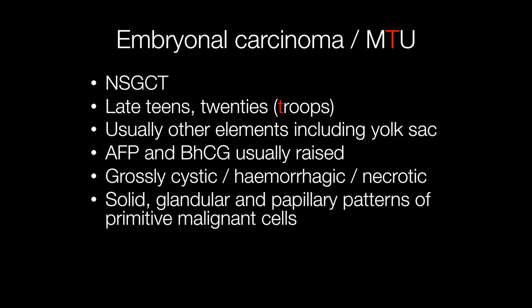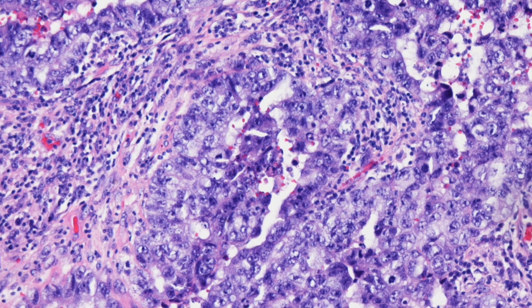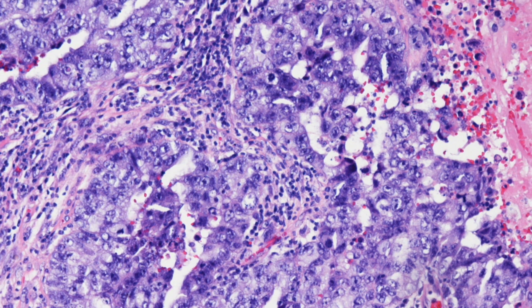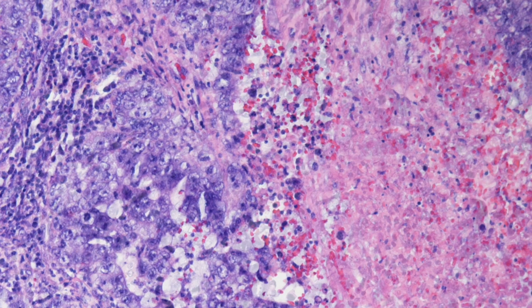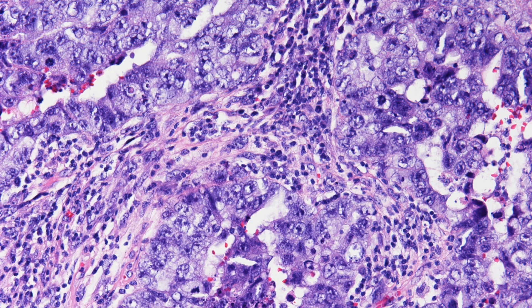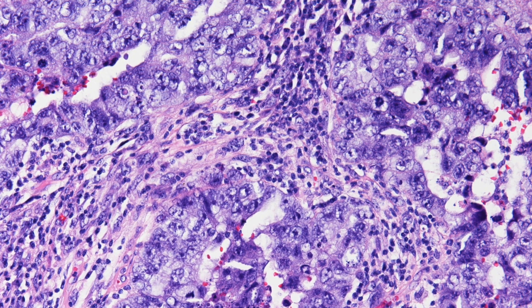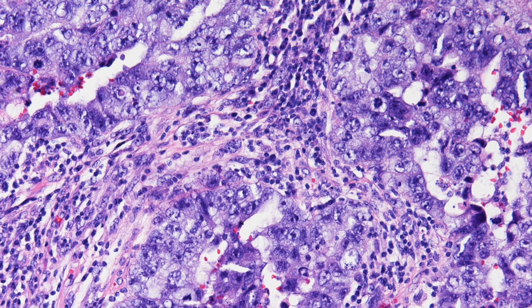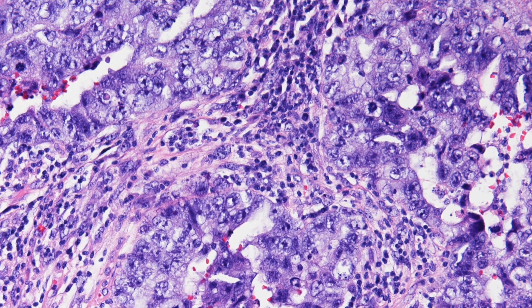The tumours have a grossly cystic, hemorrhagic, and necrotic appearance. Histologically there are solid, glandular, and papillary patterns and the cells have a primitive malignant appearance. Here you can see malignant primitive cells forming glandular structures; as we move towards the top right of the picture, the pink area is an area of necrosis. At higher power you can appreciate the pleomorphic appearance of the malignant cells. This case is slightly unusual in that the patient was 49, which is rather older than the usual age at which these tumours occur.